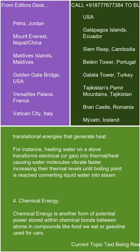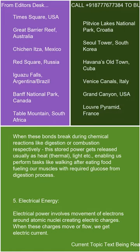4. Chemical energy. Chemical energy is another form of potential energy stored within chemical bonds between atoms and compounds, like food we eat or gasoline used for cars. When these bonds break during chemical reactions like digestion or combustion, this stored energy gets released usually as heat, thermal energy, light, etc., enabling us to perform tasks like walking after eating food, fueling our muscles with the required glucose from the digestion process.